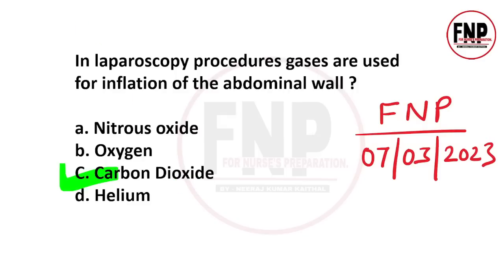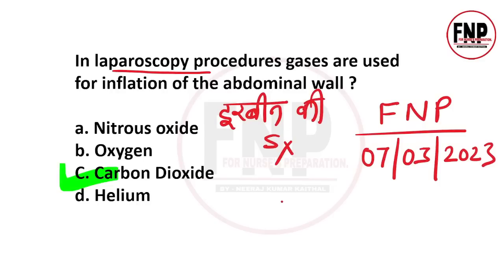Laparoscopy procedures को आप साधारण भाषा में दूर्बिन वाले operation के नाम से जानते हैं। इस प्रकार की surgery mostly abdomen और pelvis area के लिए की जाती है, therapeutic या diagnosis purpose से। Laparoscopic surgery में बहुत छोटे incisions लगाए जाते हैं और इन incisions से camera insert करके surgery perform की जाती है। Cut छोटा होने से recovery time भी कम होता है और client जल्दी ठीक हो जाता है।